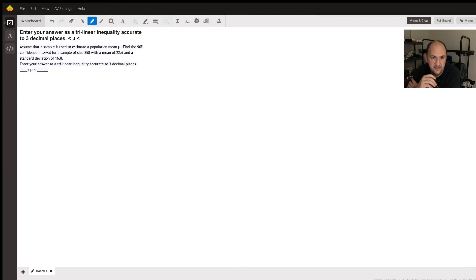In this problem, assume that a sample is used to estimate a population mean. We're going to have a sample mean X̄ used to estimate a population mean μ. Find the 90% confidence interval for a sample size of 858 with a mean of 22.6 and a sample standard deviation of 16.8.